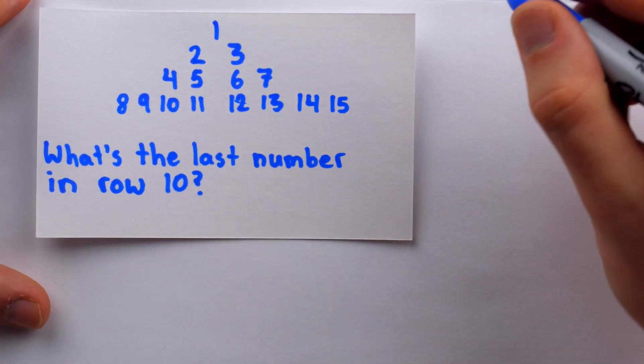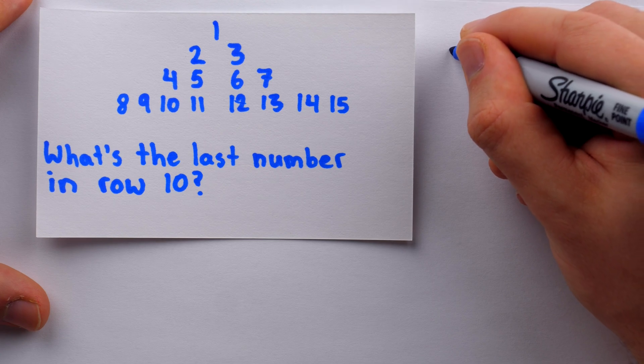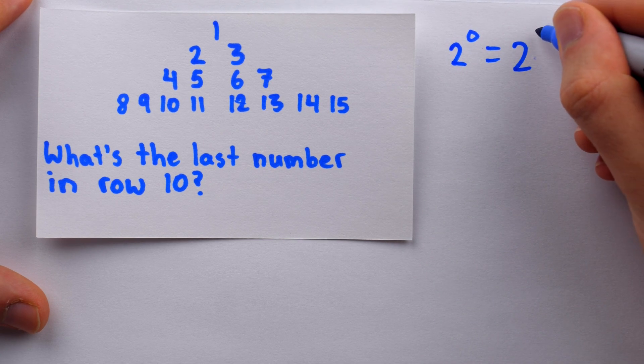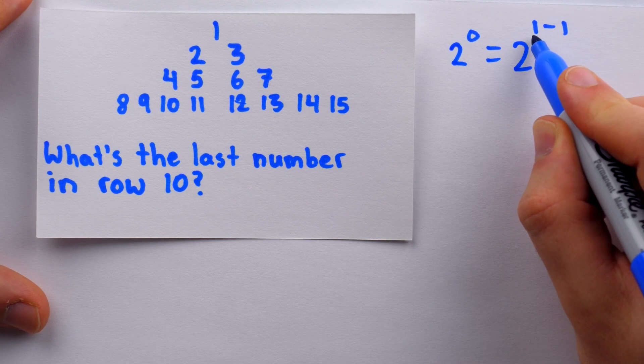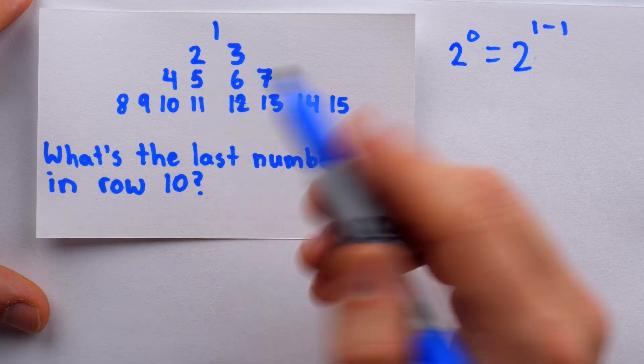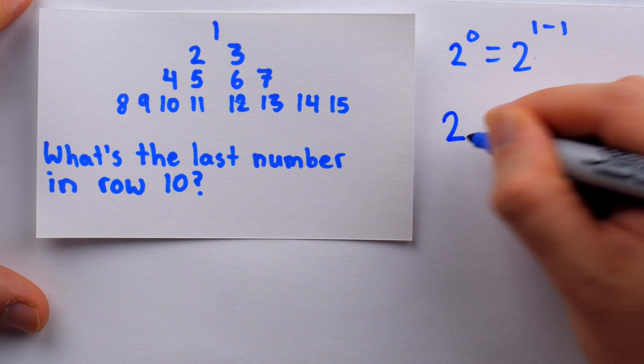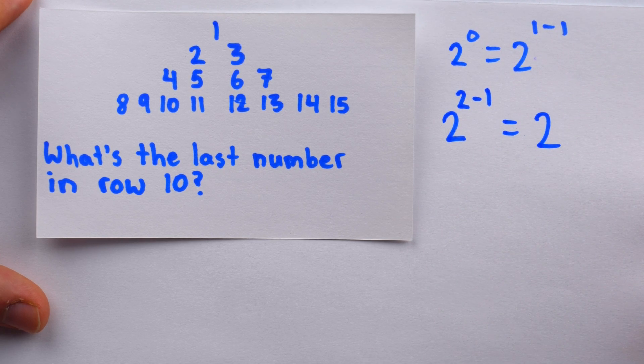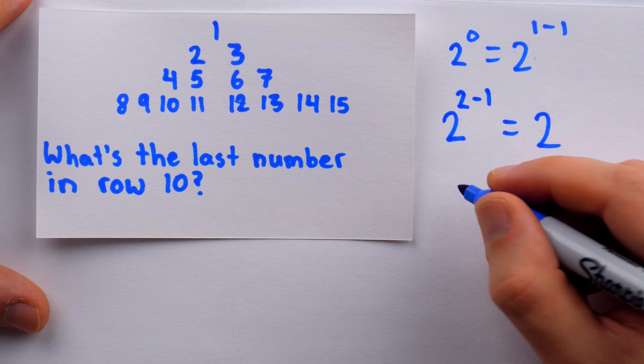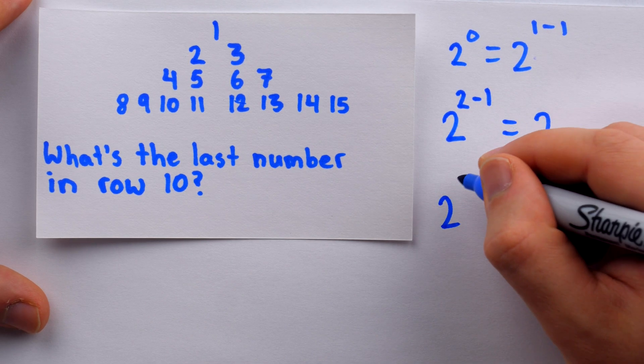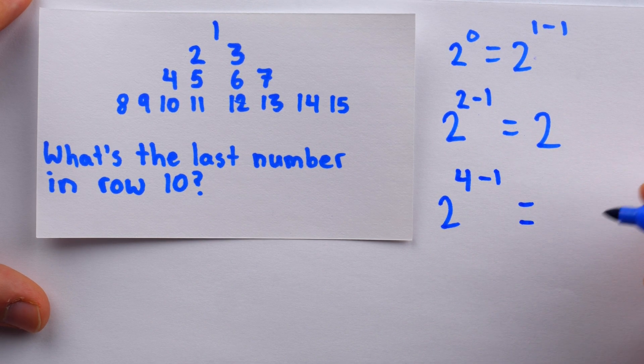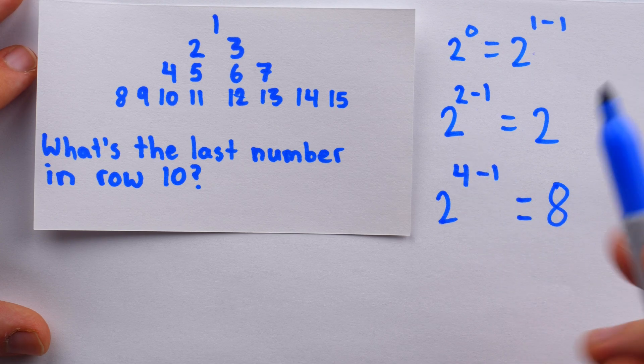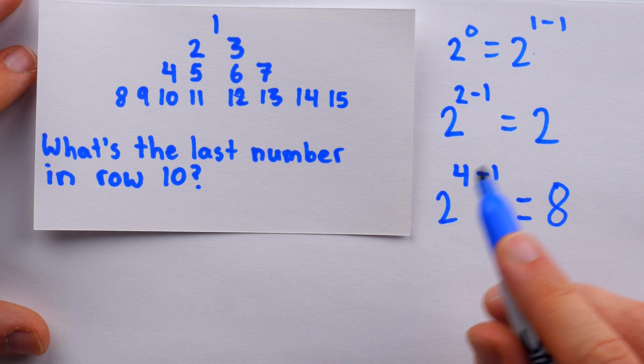Notice that in row 1, the first number, and in that case, the only number, is 2 to the power of 0. And considering that's row 1, we could also write it as 2 to the power of the row number minus 1. If we look at the next row, row 2, that first number is 2 to the power of the row number, which is 2 minus 1, and that's just 2. If we look at row 4, for example, the first number, 8, is 2 to the power of the row number minus 1. So 2 to the power of 3, which of course is 8.